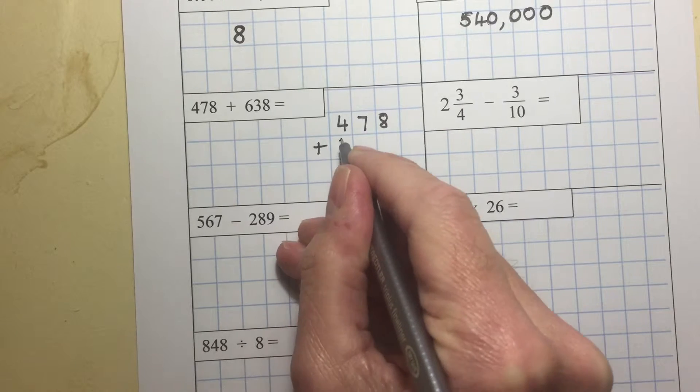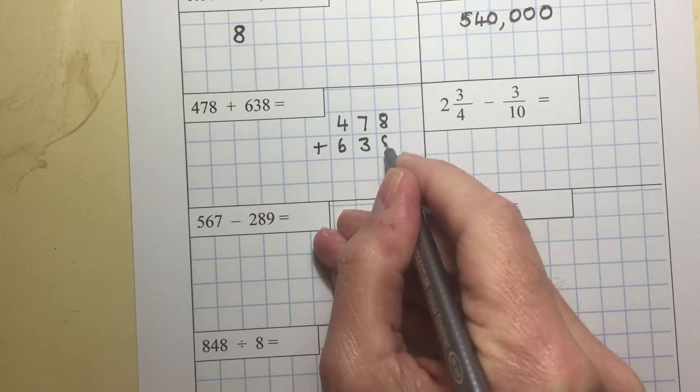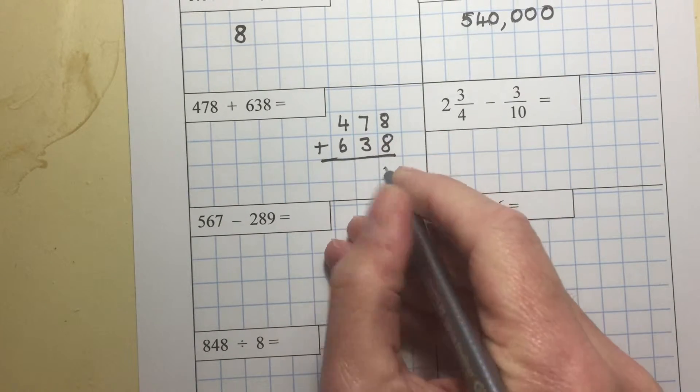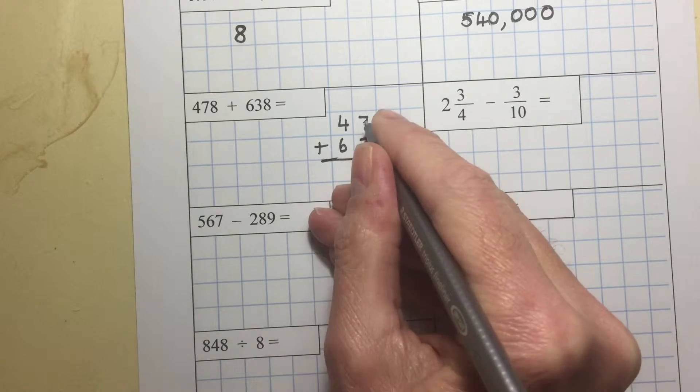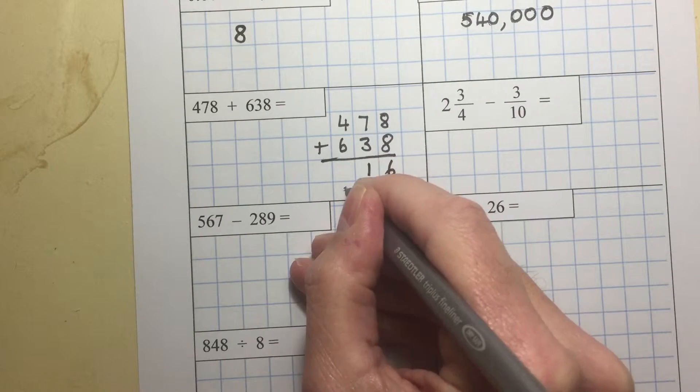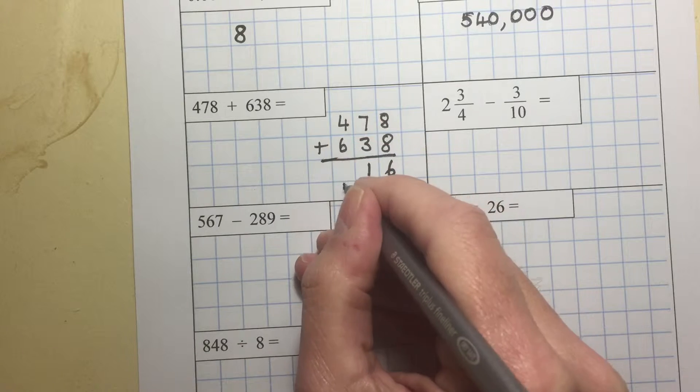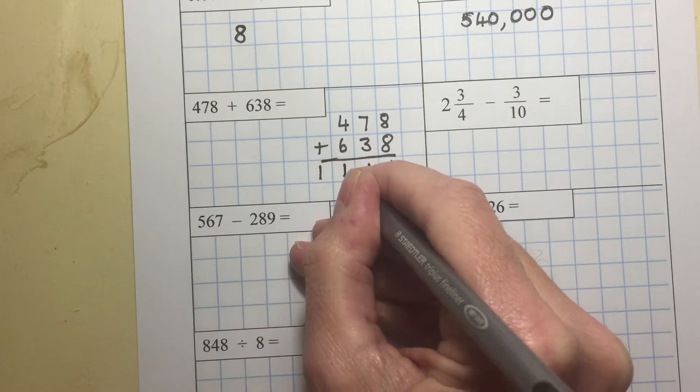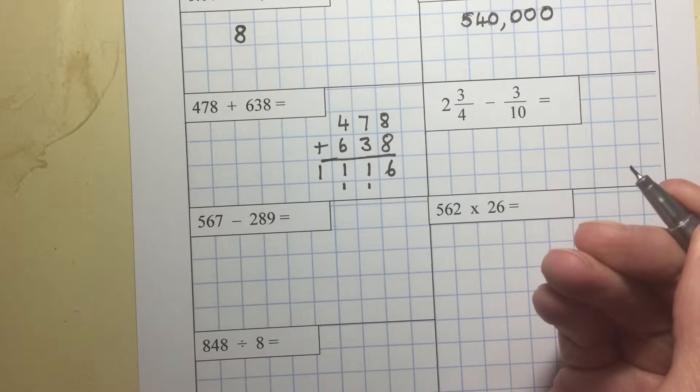478 add 638. 8 plus 8 is 16. 7 plus 3 is 10 plus 1 is 11. 4 add 6 is 10 plus 1 is 11. 1,116.